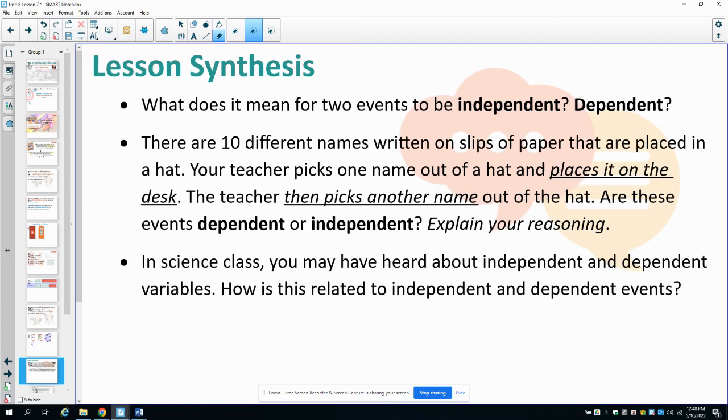All right, let's discuss what we talked about in this lesson. So the first thing that we wanted to do is be able to determine whether two events are independent or dependent. So independent events are when the probability of one does not impact the other, and dependent is where they do impact each other. So the first event directly impacts the second event's probability.